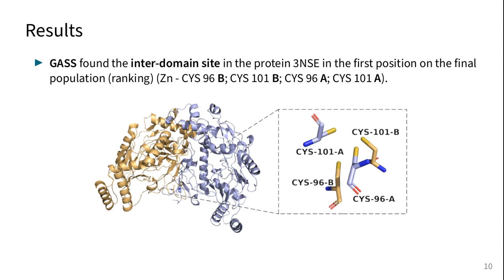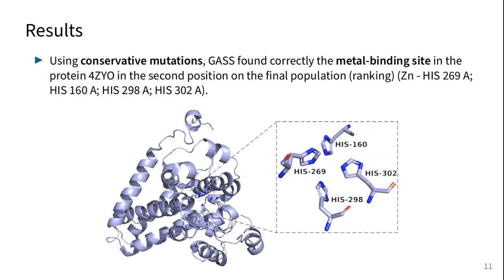Finally, to show how GAS deals with interdomain sites and conservative mutations, we performed two extra experiments. GAS found the interdomain sites in protein 3-NSA in the first position of the final population. Using conservative mutations, GAS correctly found the metal binding site in protein 4ZYO in the second position of the final population, even without a specific template with 4-studines.